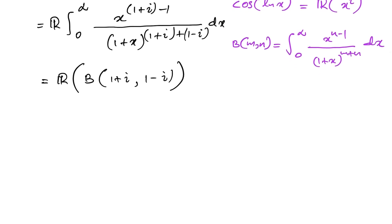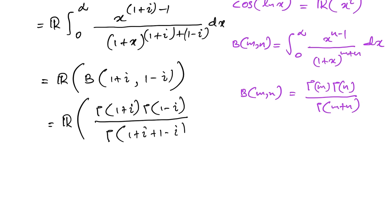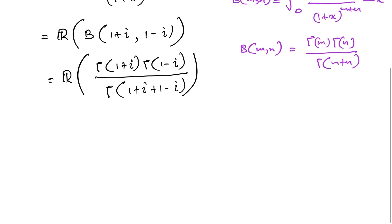We convert the beta function using gamma functions: beta of m, n equals gamma(m) times gamma(n) over gamma(m plus n). So we have the real part of gamma(1 plus i) times gamma(1 minus i) over gamma(1 plus i plus 1 minus i). The i's cancel and we get gamma(2) in the denominator, which equals 1.